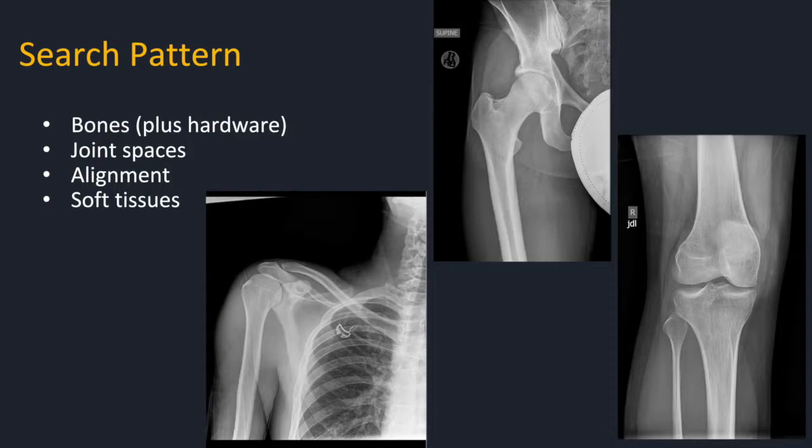The knee follows right in line too: no fracture or osseous-destructive lesion, joint space and alignment are normal, no focal soft tissue swelling.